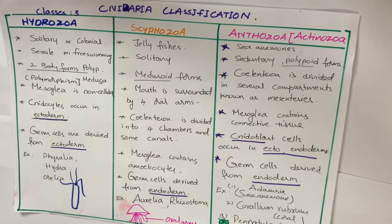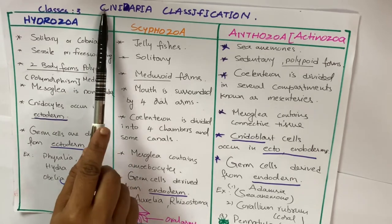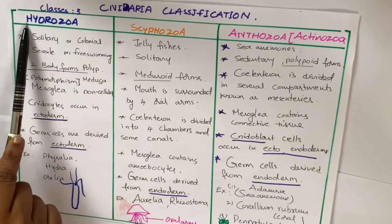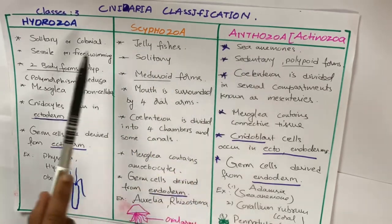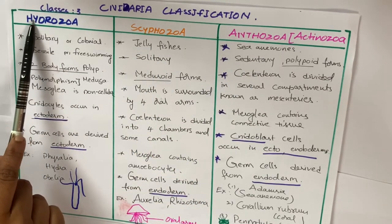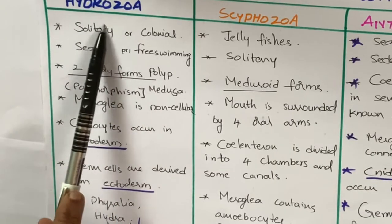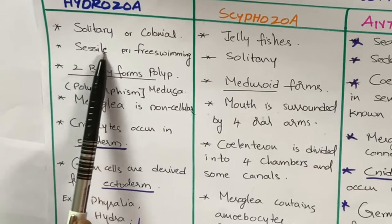Welcome. Today we learn about the classification of Cnidarians. Cnidaria is divided into three classes: Hydrozoa, Scyphozoa, and Anthozoa. Let us learn one by one. Hydrozoa — these are the solitary and colonial cnidarians.